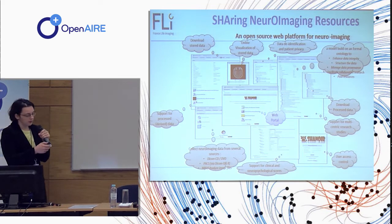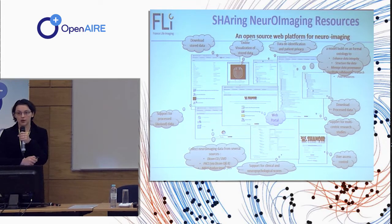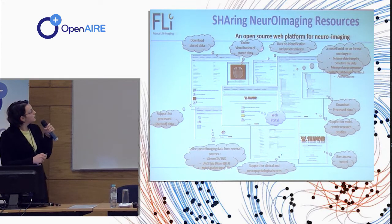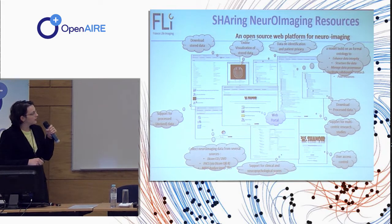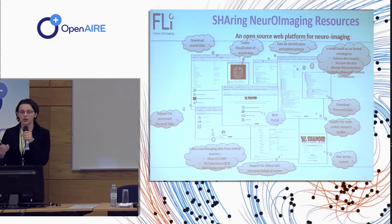Canoire, or Black Cat in English, is an open source web platform for neuroimaging. It allows researchers to store neuroinformatics data, visualize it online, and do other things like support for clinical and neurophysiological scores, user access control, and so on. This is a tool for researchers in neuroinformatics and it manages lots of data.